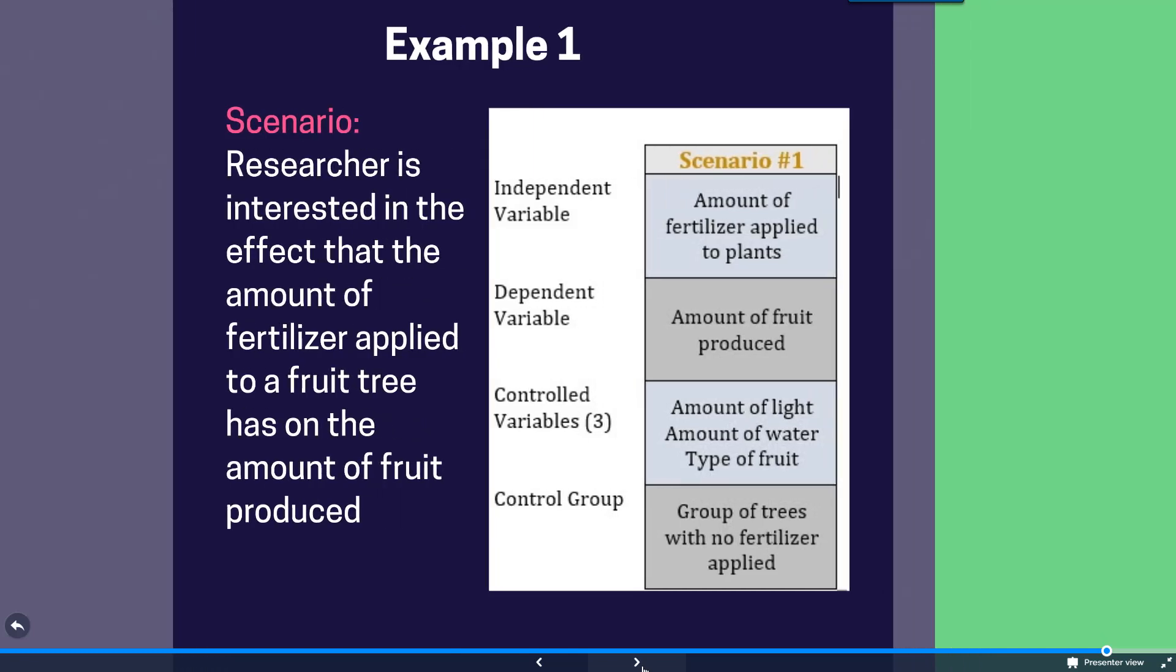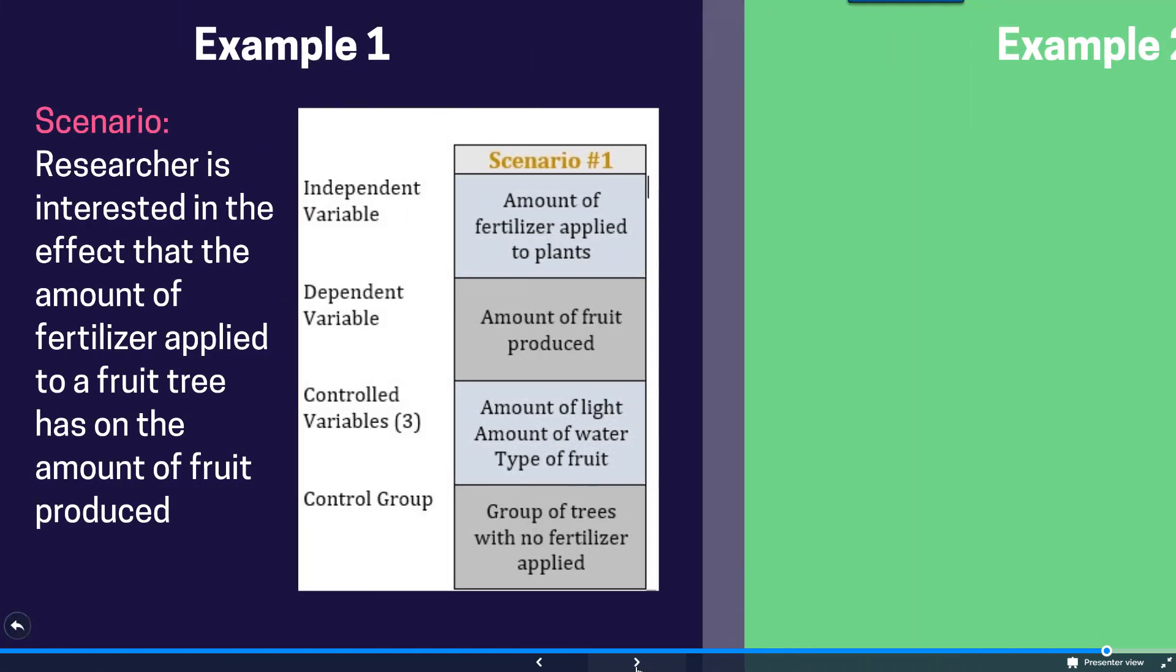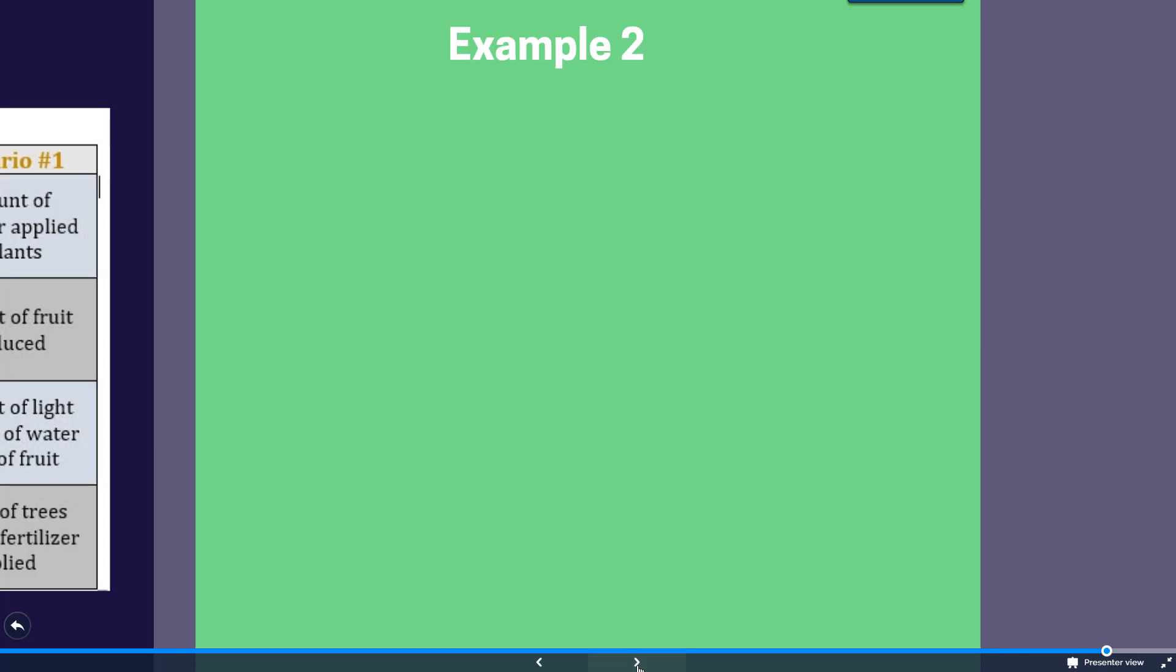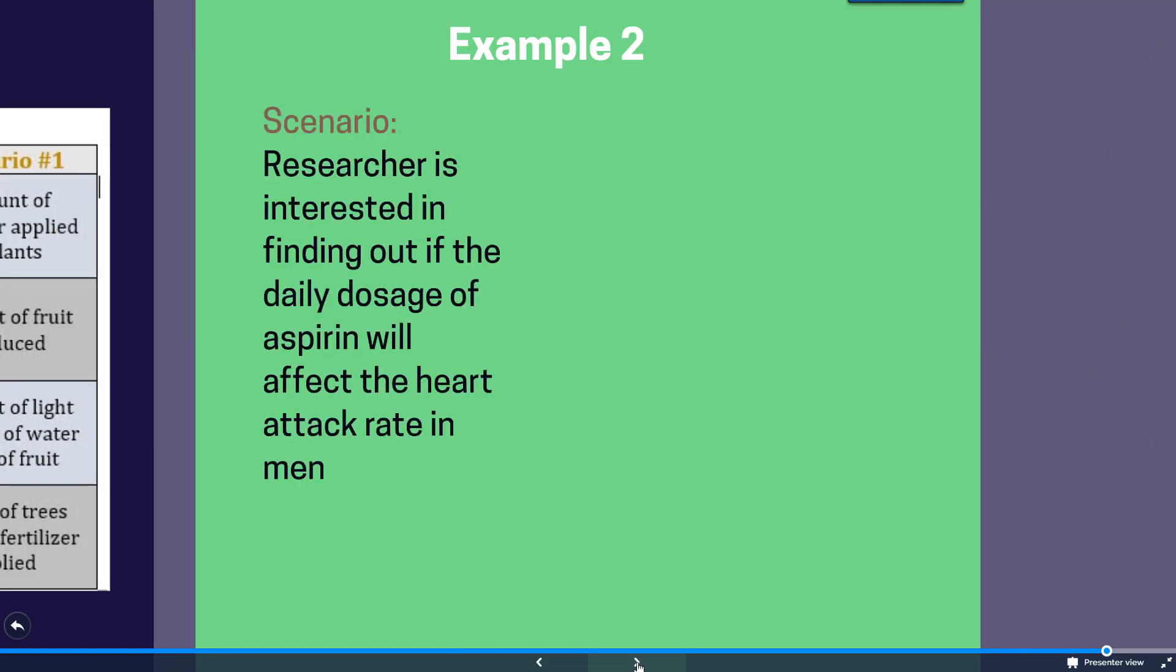In this next example that we have, example two, in this scenario a researcher is interested in finding out if the daily dosage of aspirin will affect the heart attack rate in men. So remember you're taking a look and thinking about the independent variable, dependent variable, controlled variables, and a control group. So I'll give you a few seconds.